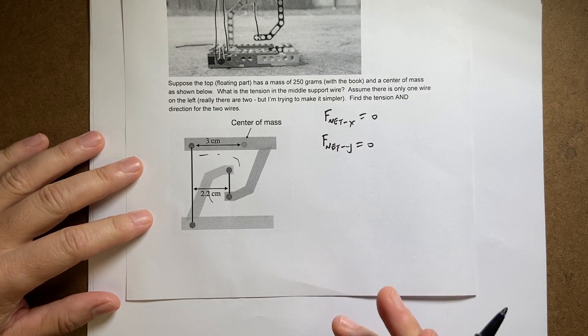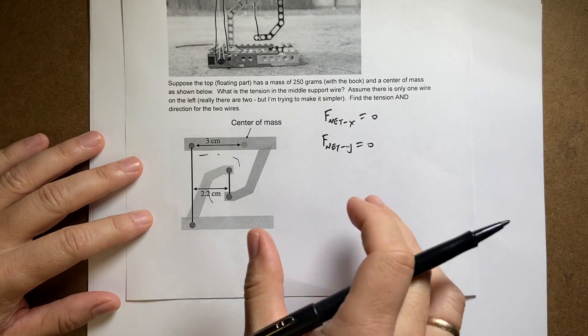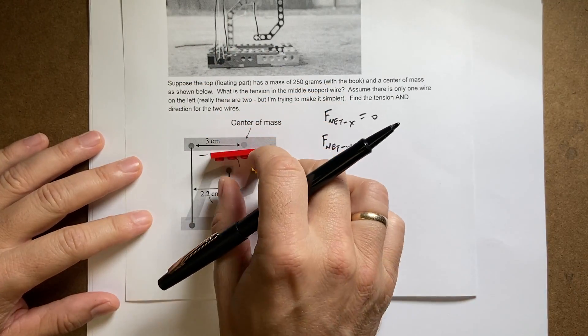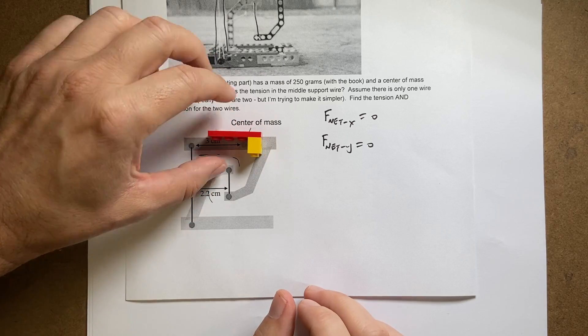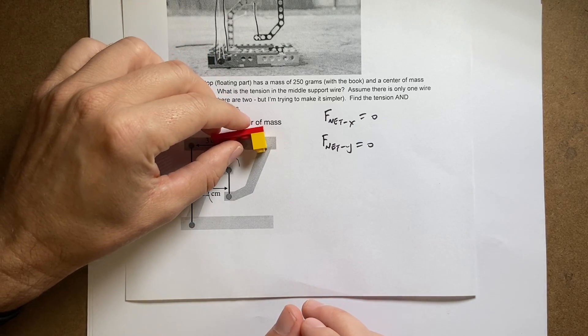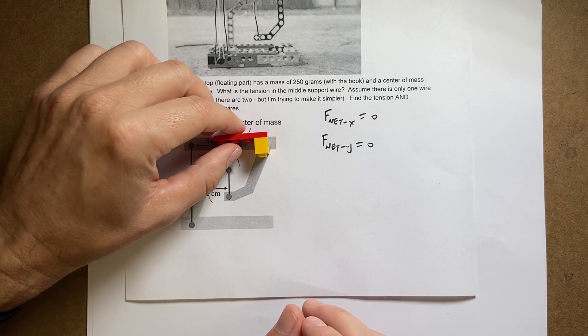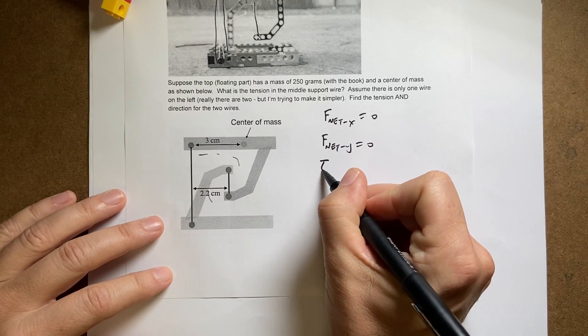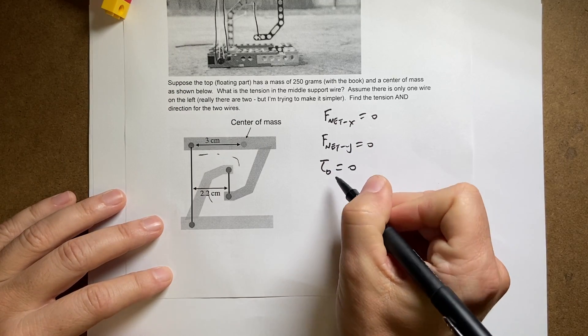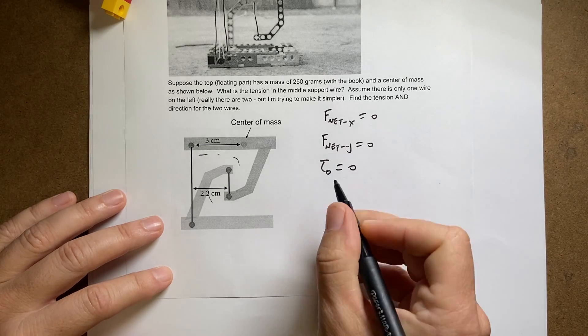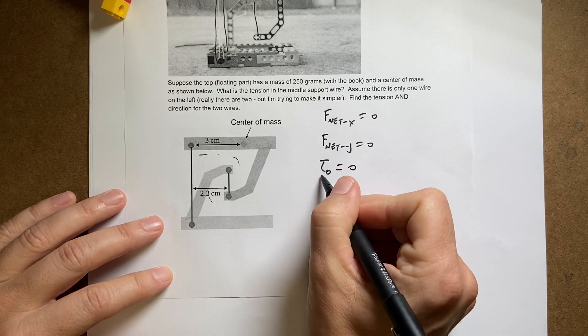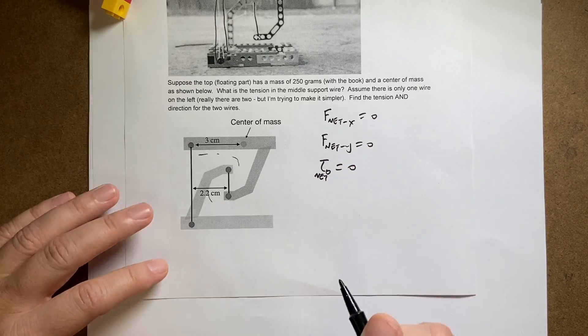And finally, if it's not rotating, it's a rigid body. If it doesn't rotate, then the change in angular position has to be zero such that the total torque about any point is also equal to zero. That should be net torque.